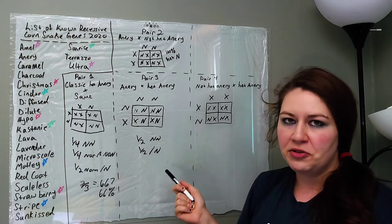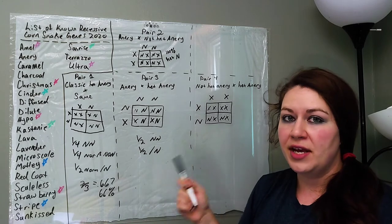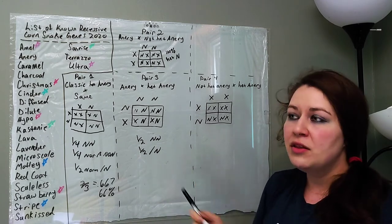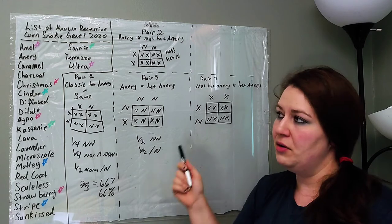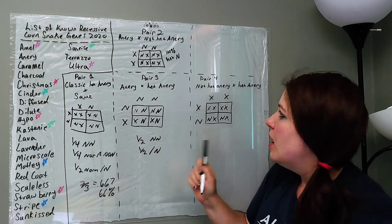Or, if you don't want to have to sit and do a Punnett square, and you can do it intuitively, if you have an anery snake that you breed to another snake, then you know for sure that all of those babies are het anery. You don't have to do a Punnett square if you can do it intuitively in your head.